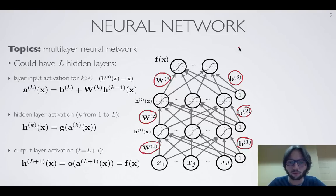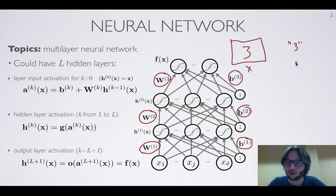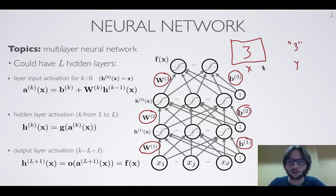One problem we'll often focus on is classification. A good example to keep in mind when discussing training a neural network is one where we have an image containing a particular character, say a 3. We assume we have some data where someone has told us that a given image corresponds to the character 3. So we have an input x and the associated target y that we must predict based on x. For character prediction, x would be the row-wise vectorization of all the pixels in the image.